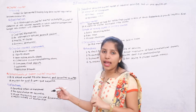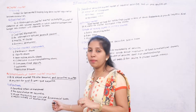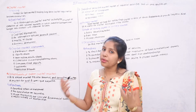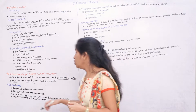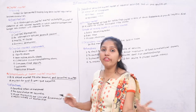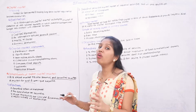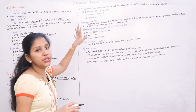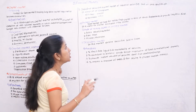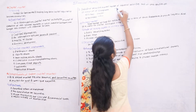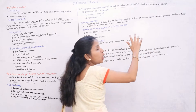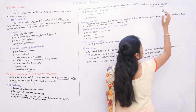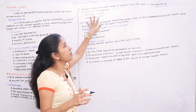Major institutions in the gilt-edged market are LIC, PF (Provident Fund), and commercial banks. There is also a heavy volume of transactions happening in this market. After that, the industrial securities market is the market for industrial securities which includes bonds, equities, and so on.